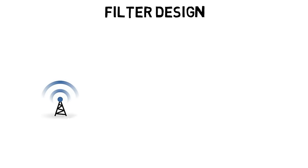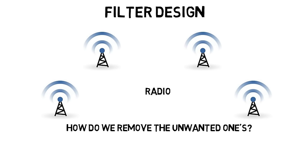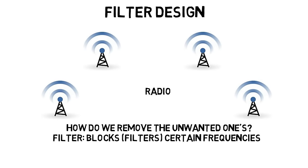So an example of an elective class you might take is filter design, which I want to go into a little detail on. As I said in the computer engineering video, when something is receiving many different signals, like a radio antenna that's receiving many different radio stations at once, how do we remove the unwanted ones? Well, we have a filter circuit that blocks out or filters certain frequencies, but allows other ones to pass through.